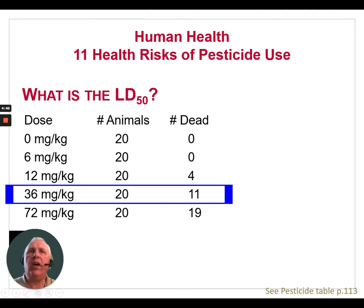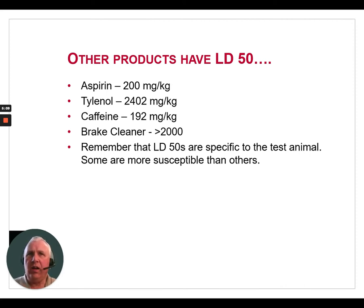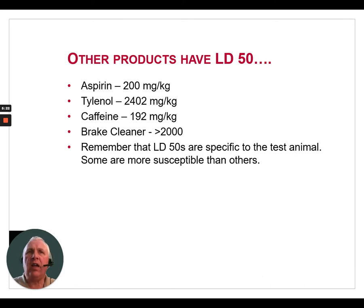There are LD50s not just for pesticides, but for other products we may have at home or deal with daily. For example, aspirin has an LD50 of approximately 200 mg/kg of body weight. Tylenol is 2,402 mg/kg. Pure caffeine — not just a regular cup of coffee — is 192 mg/kg. Brake cleaner, something you may have in your shop, is greater than 2,000 mg/kg. Remember that LD50s are specific to the test animal, and some animals are more susceptible than others.